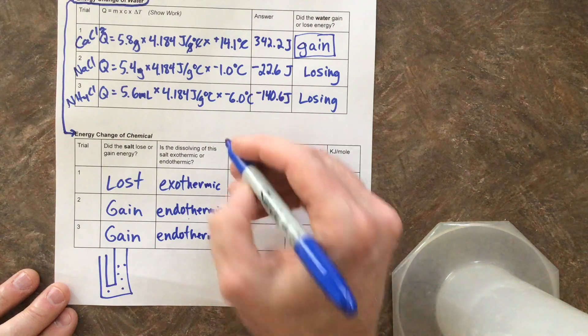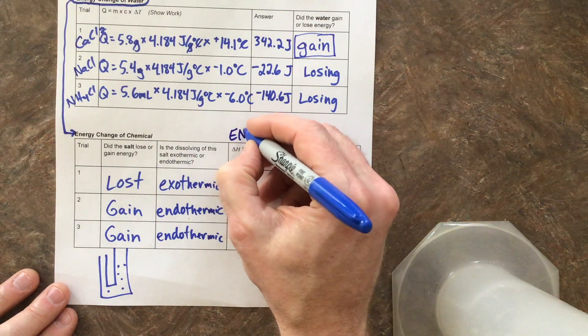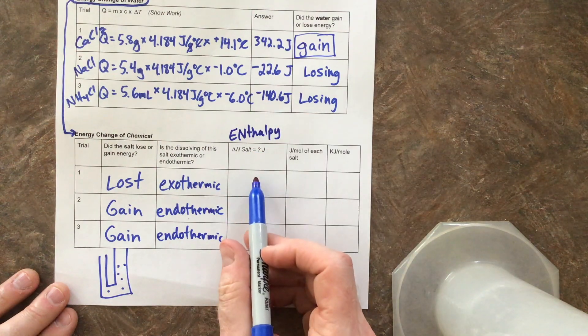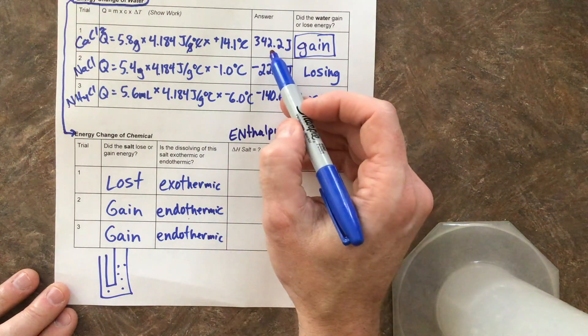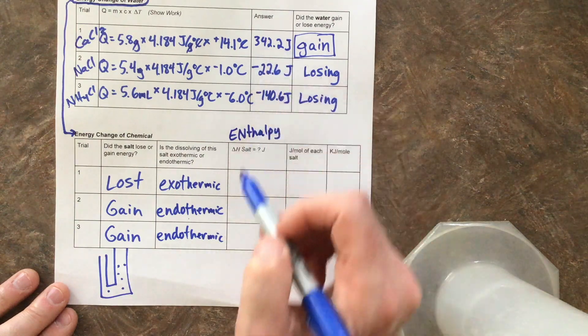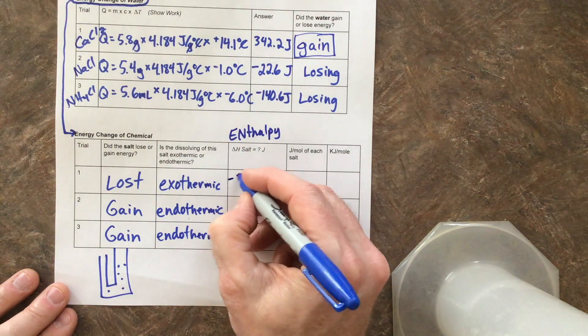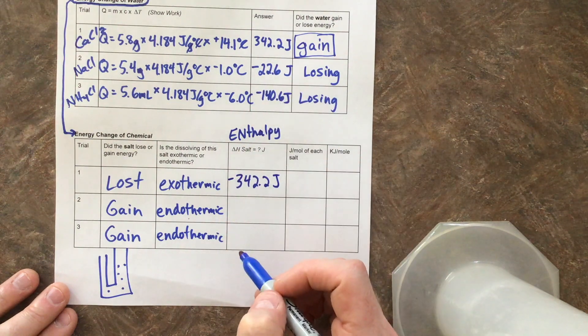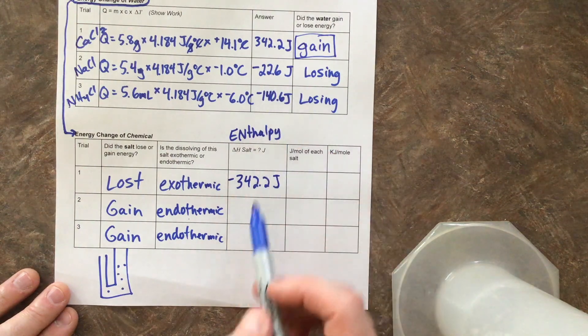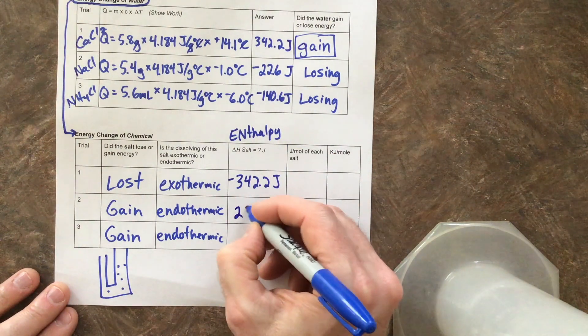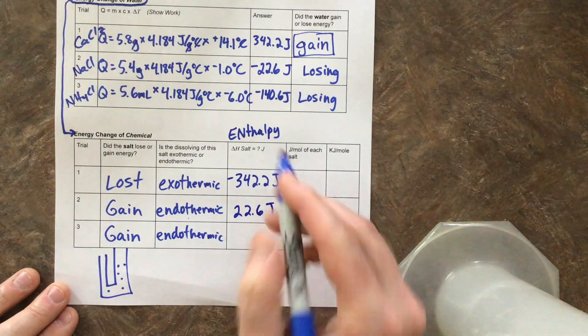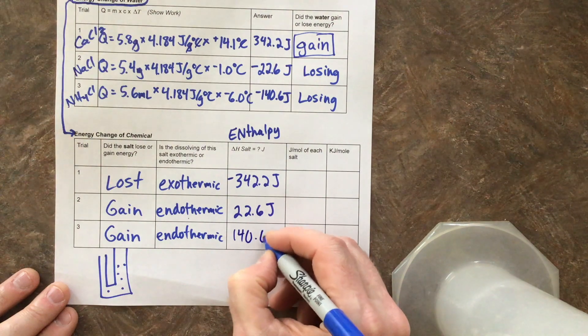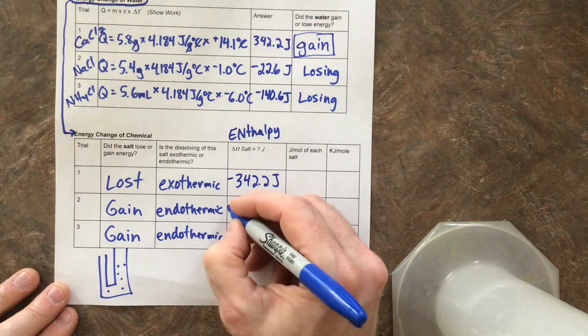So we get to this thing, this ΔH. Remember, ΔH means enthalpy. And enthalpy is just a fancy word for saying energy. What's the heat? Well, if this guy up here gained 342.2 joules, guess what the salt did? The salt lost 342.2 joules. It's the same number, flip-flopped. If this one lost that much energy, then guess what? This salt gained 22.6 joules. If this one lost this much energy, then this one gained that many joules of energy. These numbers would be positive.